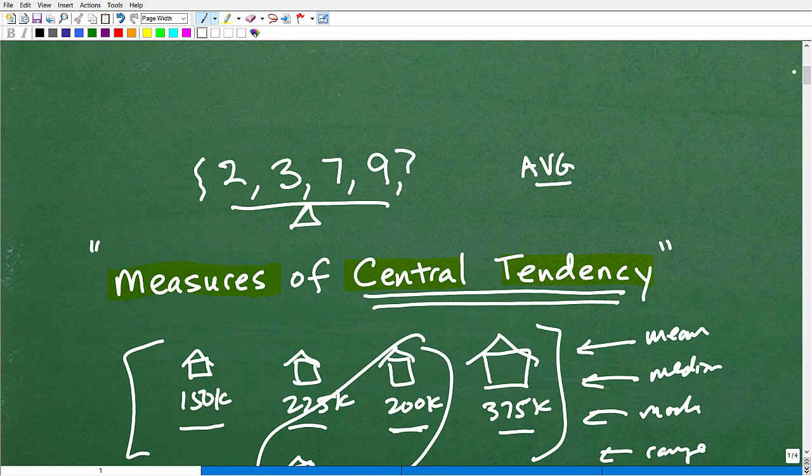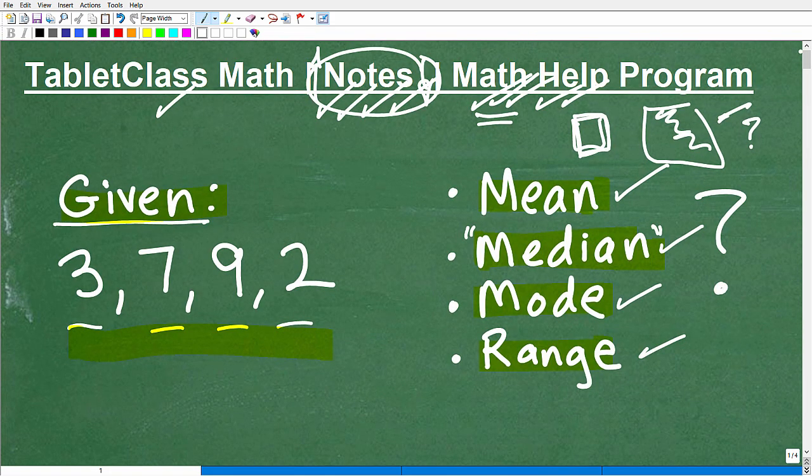There's a lot of other measures of central tendency, things like the standard deviation, all that kind of good stuff. As you learn more about statistics, and you should - statistics is a fascinating topic because it's so used in real life. But right now, the whole idea is to get you to understand the basics: mean, median, mode, and range.